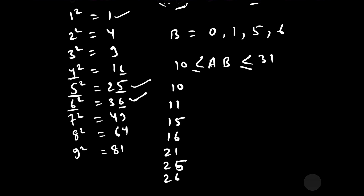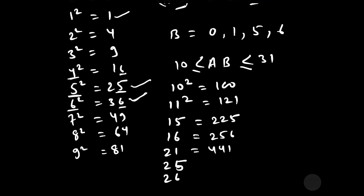Now let us square each candidate: 10²=100, 11²=121, 15²=225, 16²=256, 21²=441, 25²=625, 26²=676.